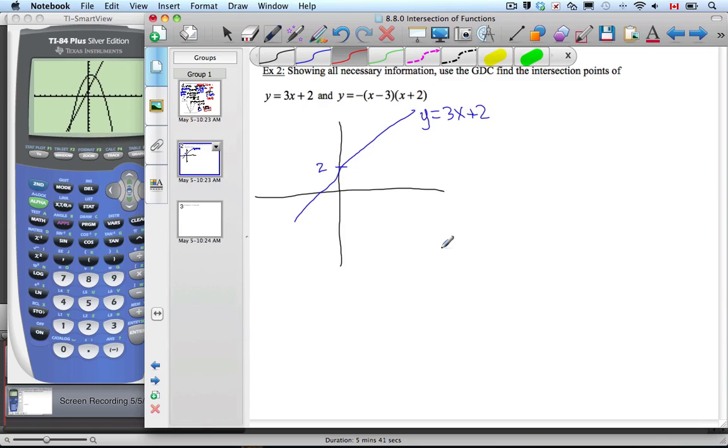Now, some of the key points on the other one are we can see the x-intercepts as being 3 and -2 on that one.